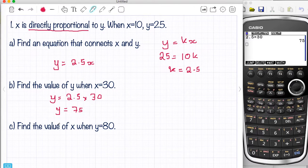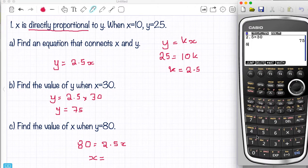And we can work the other way. Find the value of X when Y equals 80. So 80 equals 2.5X. So I'm going to divide both sides by 2.5. So 80 divided by 2.5 is 32.